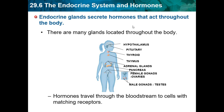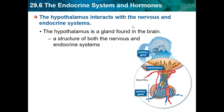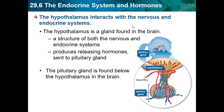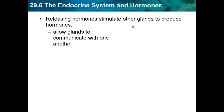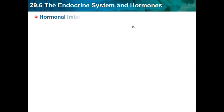Hormones travel through the bloodstream to cells with matching receptors. The hypothalamus is a gland found in the brain and interacts with both the nervous and endocrine systems. It produces releasing hormones to the pituitary gland, which is found below the hypothalamus. These releasing hormones stimulate other glands to produce their own hormones, allowing glands to communicate with one another. The system is also used in temperature regulation.